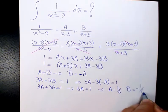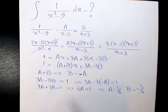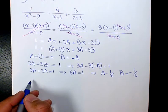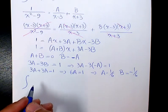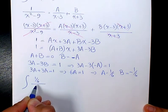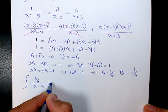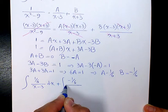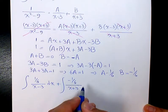Then you need to divide both sides by 6, so A will be 1 over 6 and B will be negative 1 over 6, because B is negative A. So then we can arrange the whole thing to 1 over 6 divided by x minus 3 dx plus negative 1 over 6 divided by x plus 3 dx.